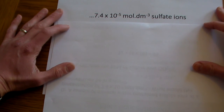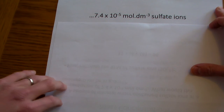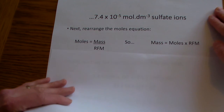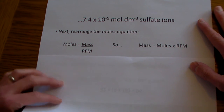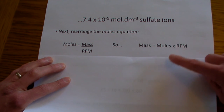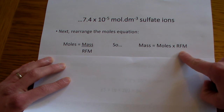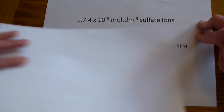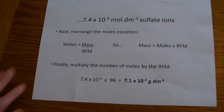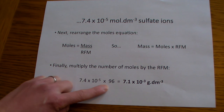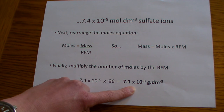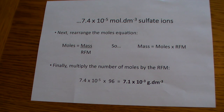So I've just recapped at the top there the molar concentration of the sulphate ions. The first thing we need to do is rearrange the moles equation. If moles equals mass divided by RFM, then mass equals moles multiplied by RFM. So the final step is to take the molar concentration, 7.4 × 10⁻⁵, multiply that by the RFM of 96, and that gives us a mass concentration of 7.1 × 10⁻³ grams per decimetre cubed.